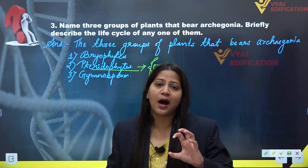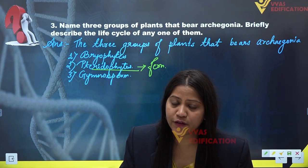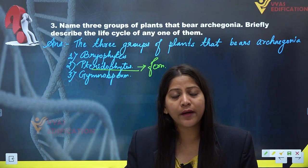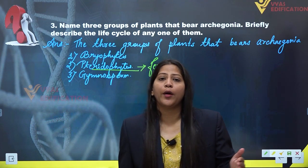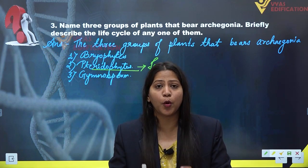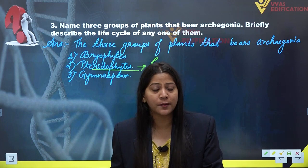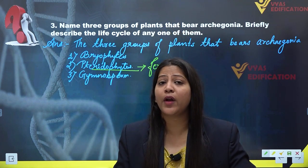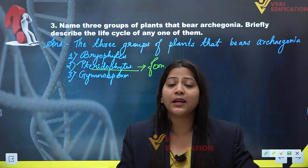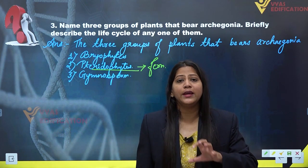These sporangia contain spore mother cells, which are also diploid. These spore mother cells undergo meiotic division, or reductional division, to form haploid spores. These haploid spores germinate to form a new individual plant, which is the gametophyte.